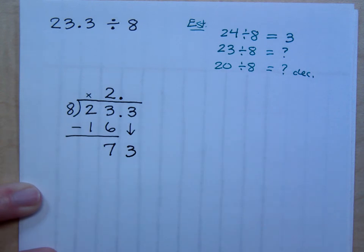Bring down the 3. How many times is 8 going to 73? If it goes in 8 times, it's going to give me 64, and then my remainder is going to be 9, which is too high. 8 times 9 is 72. So I do the 9 here, so 9 times 8 is 72.